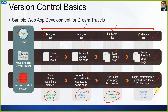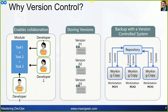Why do we need version control? It enables collaboration. For example, a module consists of Task 1, Task 2, and Task 3. Developer 1 works on Task 1, Developer 2 on Task 2, Developer 3 on Task 3. Since the module requires all three tasks working together, we need to collaborate between three users so we can have the complete module ready.